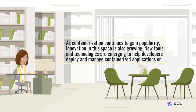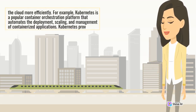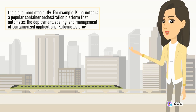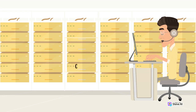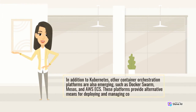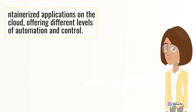As containerization continues to gain popularity, innovation in this space is also growing. New tools and technologies are emerging to help developers deploy and manage containerized applications on the cloud more efficiently. For example, Kubernetes is a popular container orchestration platform that automates the deployment, scaling, and management of containerized applications. Kubernetes makes it easy to deploy and manage large, complex containerized applications. In addition to Kubernetes, other container orchestration platforms are also emerging, such as Docker Swarm, Mesos, and AWS ECS. These platforms provide alternative means for deploying and managing containerized applications on the cloud, offering different levels of automation and control.